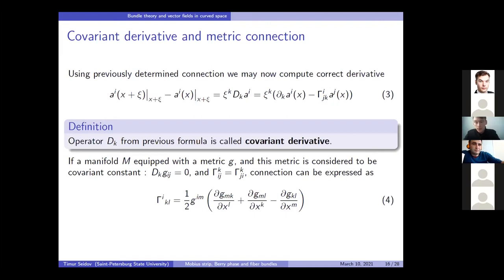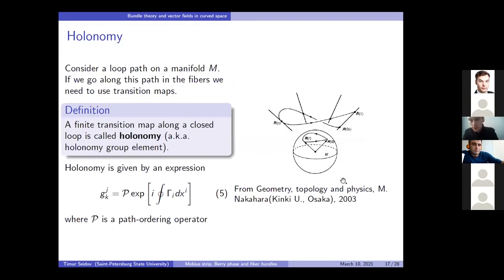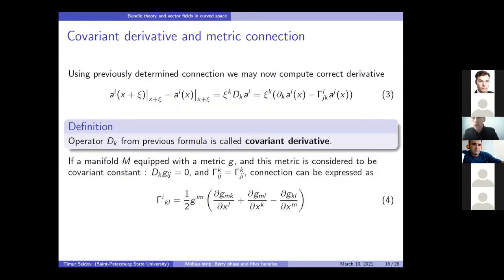So, if a manifold is equipped with a metric, and this metric is considered to be covariant constant, which means that the action of our covariant derivative on the metric tends to zero or is zero, and the connection is symmetric, which can also be done practically anywhere if you don't have spinors in your theory. You may express the connection, as in formula... I cannot see a number right here because of the zoom, but I believe it should be... It is five, so four, probably.